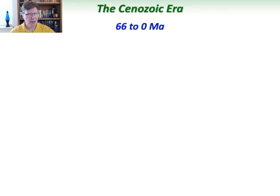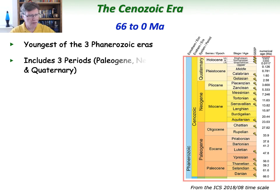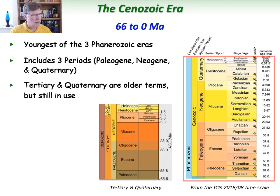The Cenozoic era picks up after the Mesozoic at 66 million years, all the way to the present — so it is 66 million years in length. It is the youngest of the three Phanerozoic eras: the Paleozoic, Mesozoic, and now Cenozoic. We've split the Cenozoic into three periods — the current convention — the Paleogene, Neogene, and Quaternary.